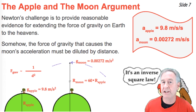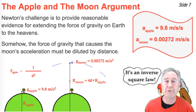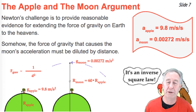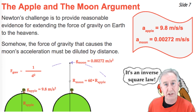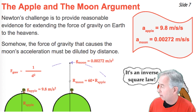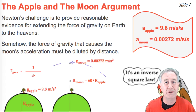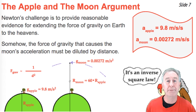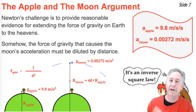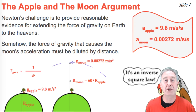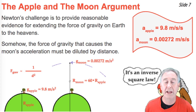He recognized that since the acceleration of the Moon was so much smaller, if gravity was causing its acceleration, then somehow gravity must be diluted by distance. He recognized that the Moon was 60 times further from the center of the Earth than the Apple was. And being 60 times further, its acceleration value ends up being 60 squared times smaller. This is known as the inverse square law.